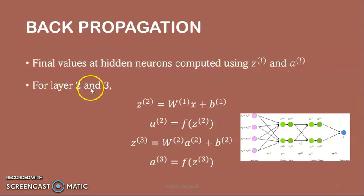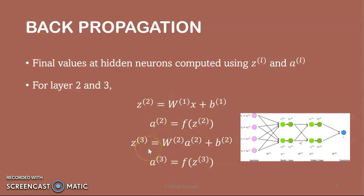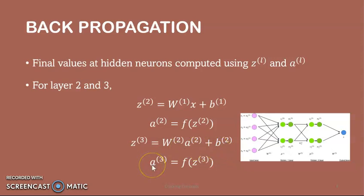Computing this for layers 2 and 3, we get the weighted input of layer 2 given as the weight of layer 1 multiplied by the input plus bias in layer 1, and activation in layer 2 given as a function of weighted input of layer 2. Similarly for layer 3, the weighted input of layer 3 is given as weight of layer 2 multiplied by activation in layer 2 plus bias in layer 2. Activation in layer 3 is given as a function of weighted input of layer 3.